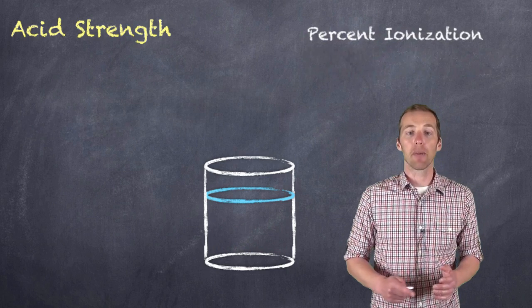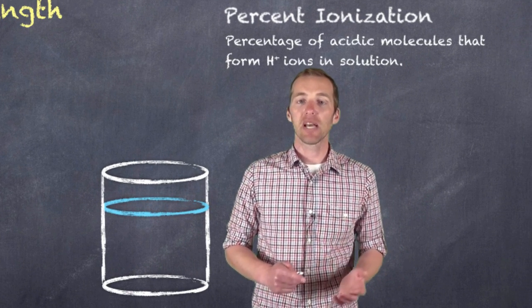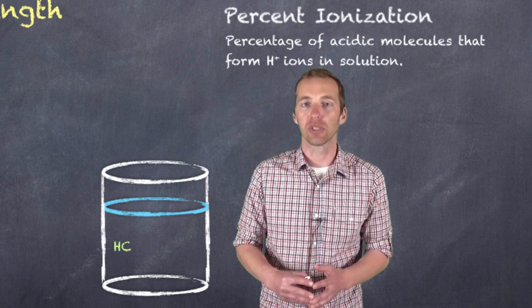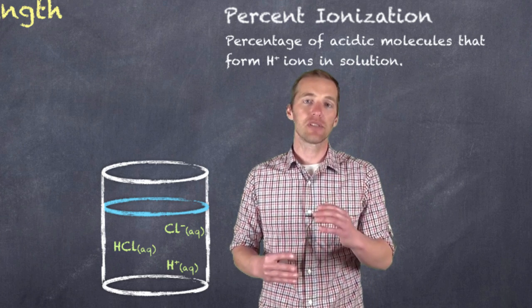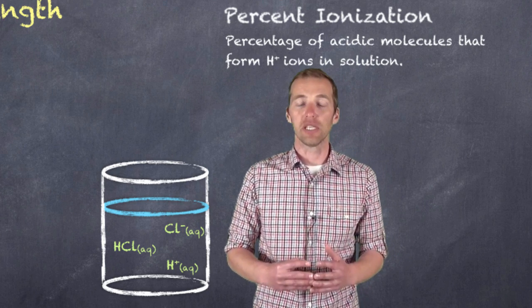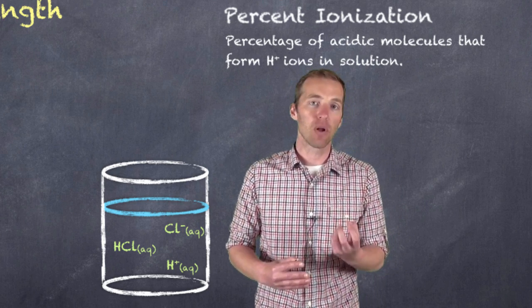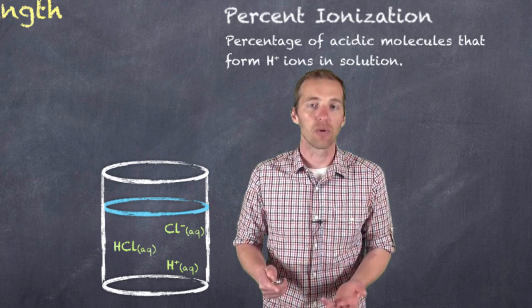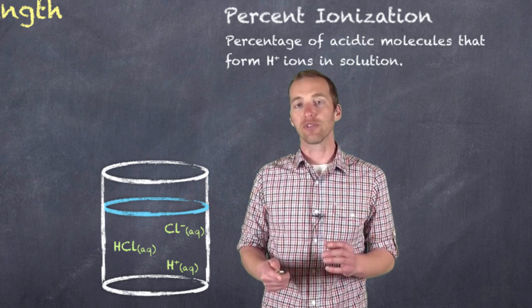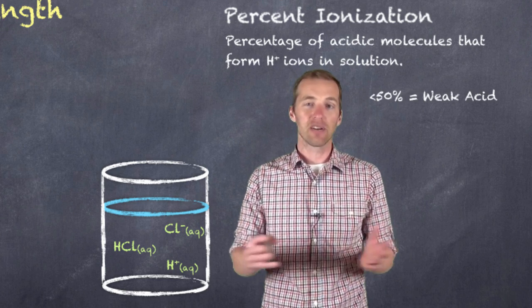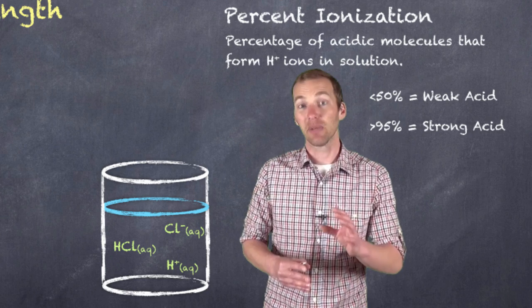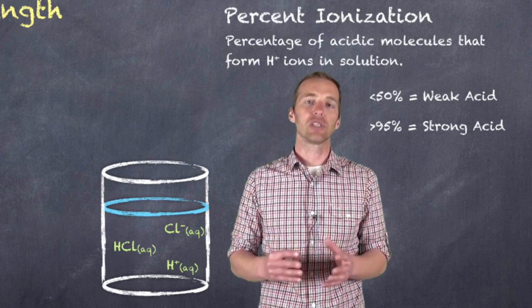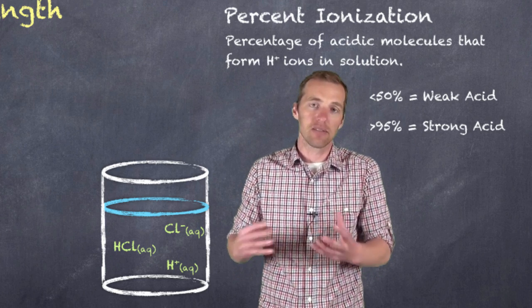Well, what about this last one here? What about percent ionization? Well, percent ionization is the percent of acidic molecules that ionize into hydrogen ions in solution. So what that tells us is when a substance dissolves, an acid dissolves into water, it tells us how many of those acidic molecules actually form hydrogen ions. And this is, in fact, how we classify something as a strong acid or a weak acid. You see, strong acids are gonna ionize almost completely. That is greater than 95%. And typically we say 99, but I'm gonna include nitric acid. So 95% of those molecules when in solution will actually form hydrogen ions. The rest exist as acidic molecules.